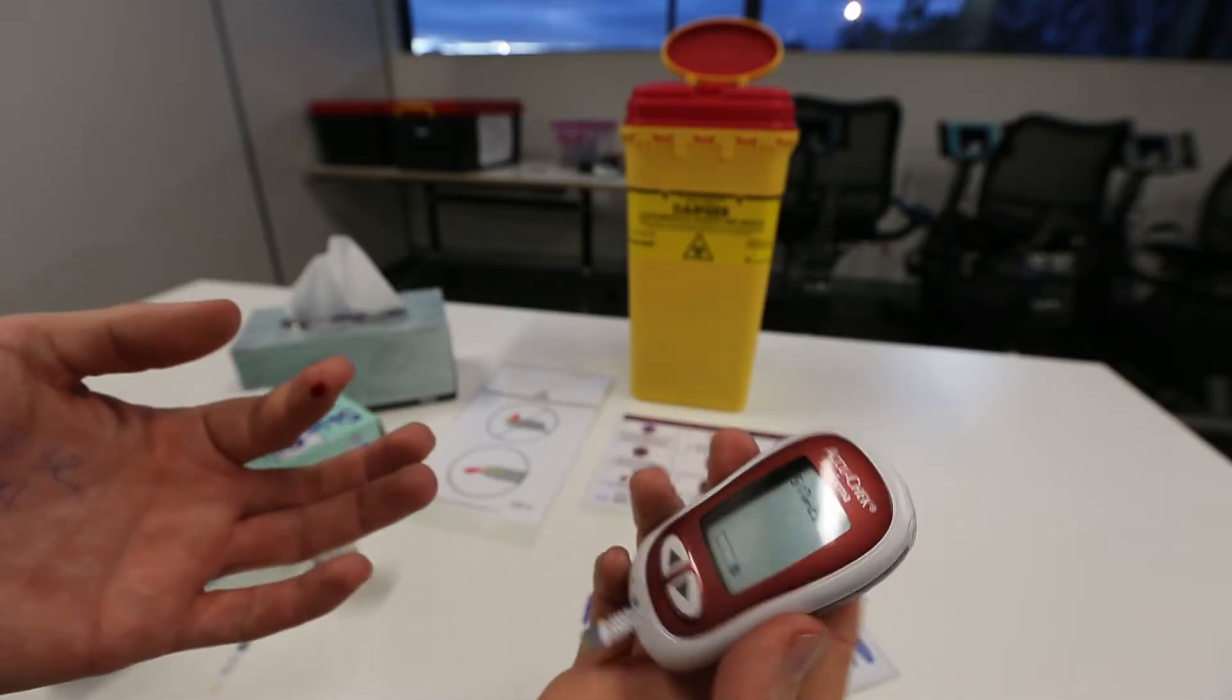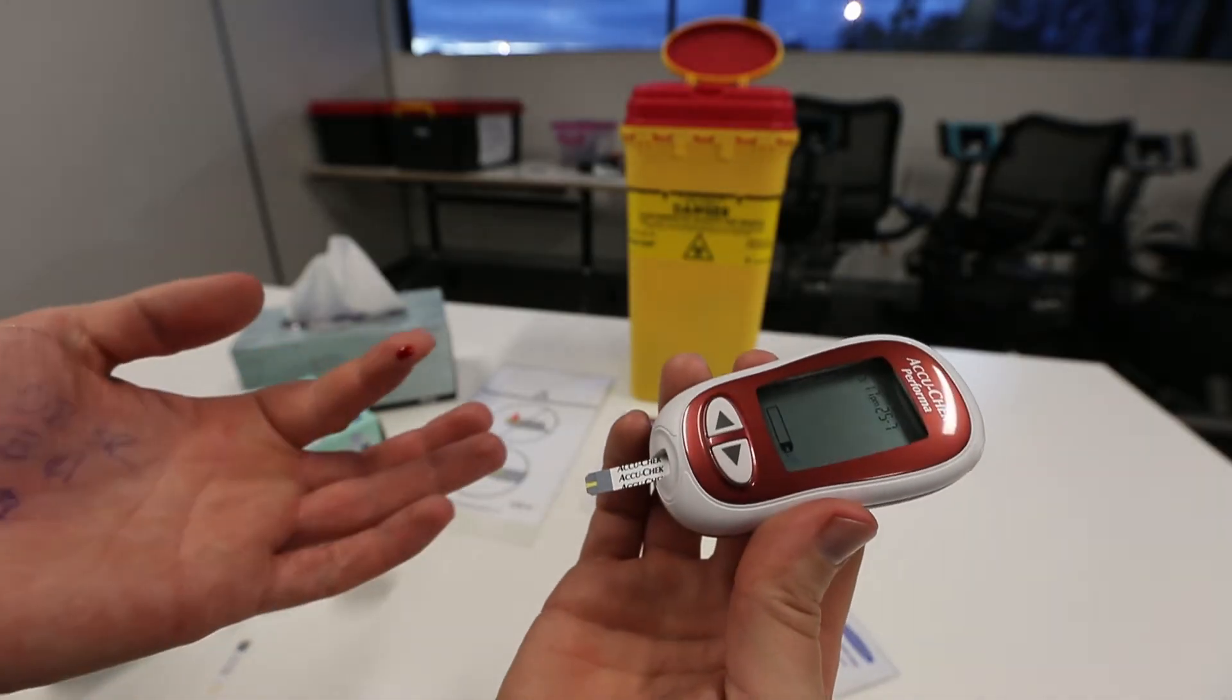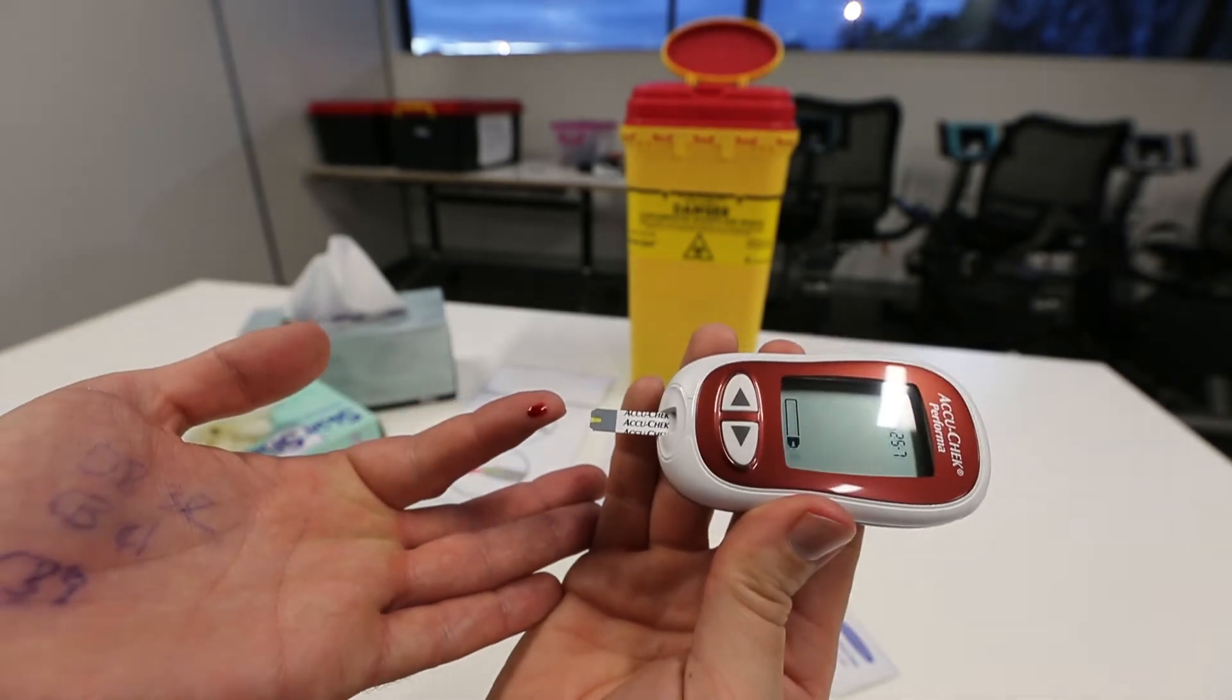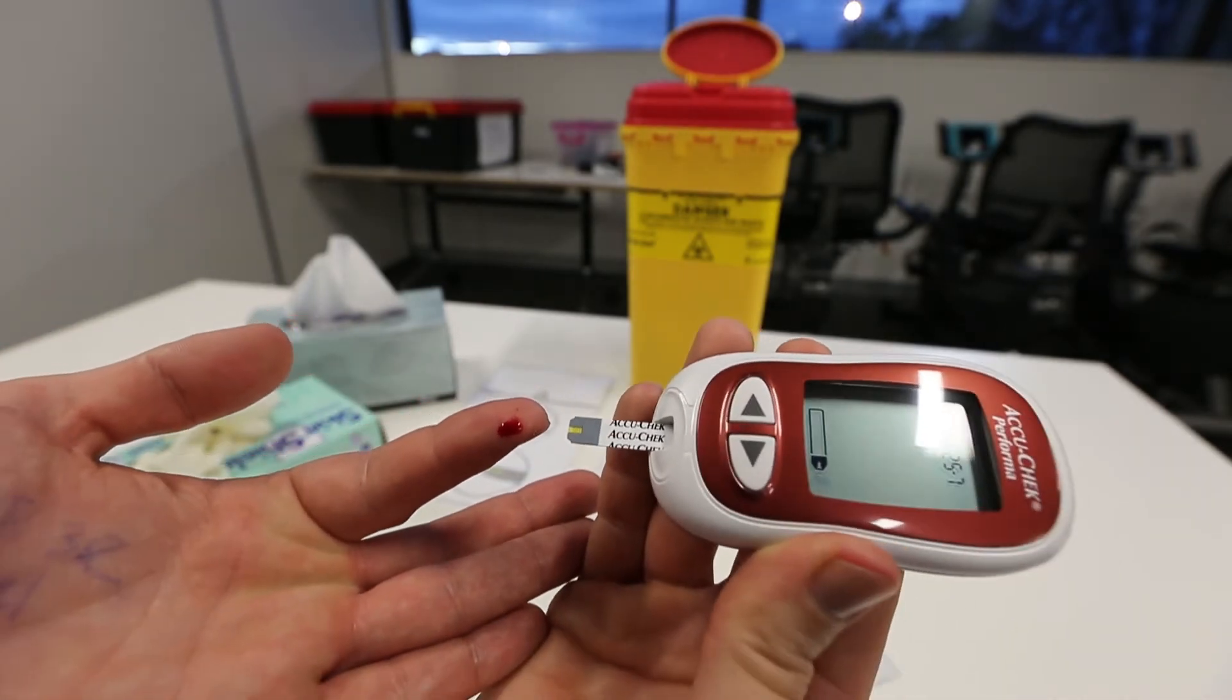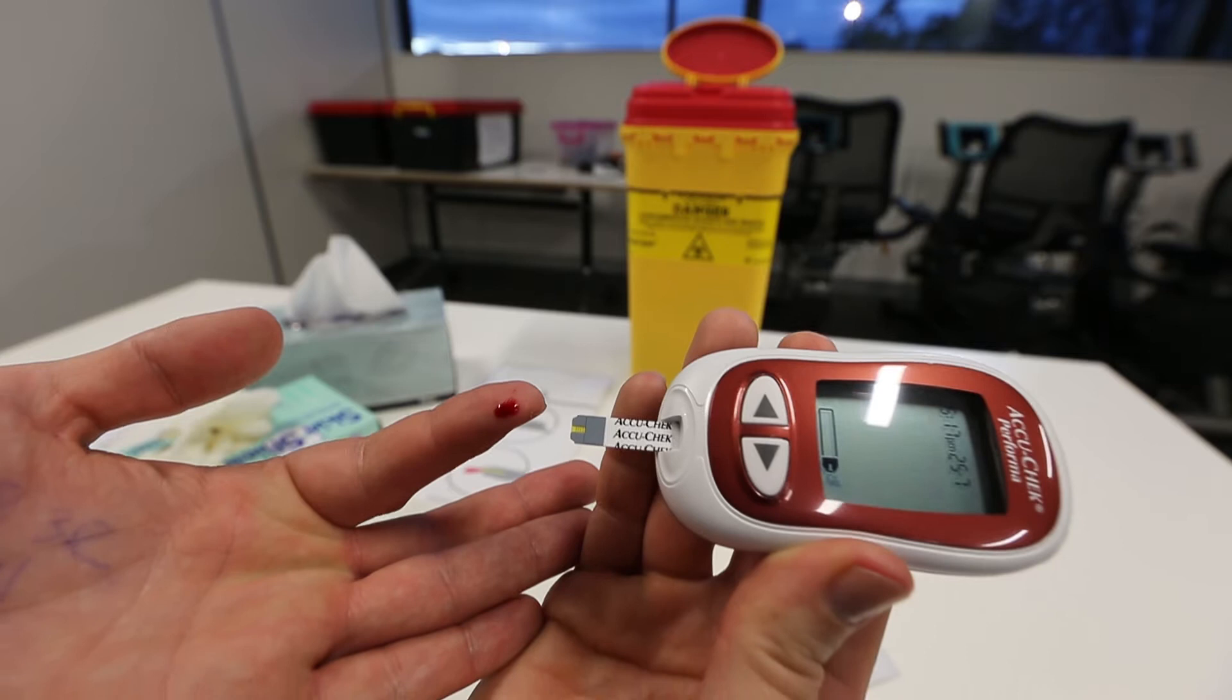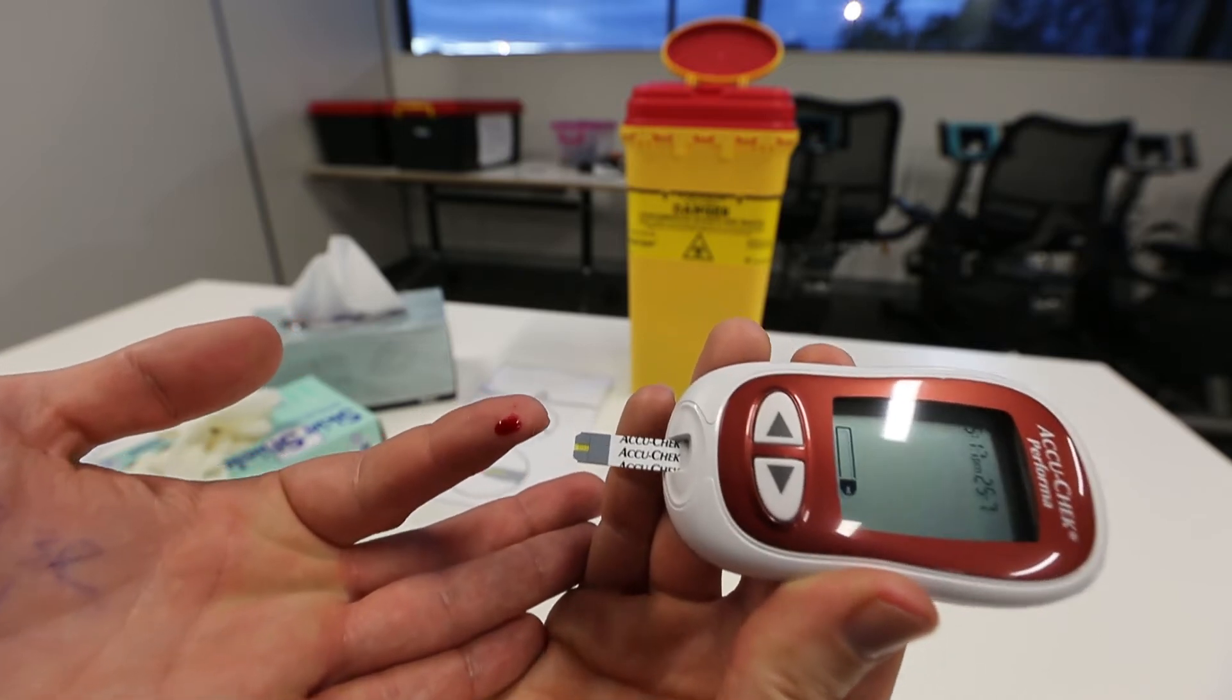Once again, approach the blood droplet perpendicularly with the end of the test strip. This will allow the blood to be drawn by capillary action up into the yellow test area.